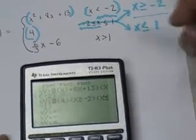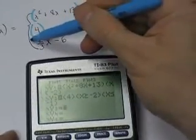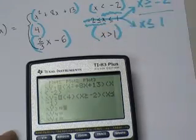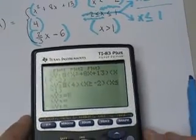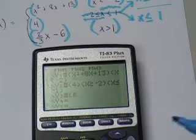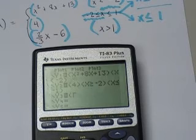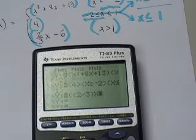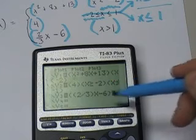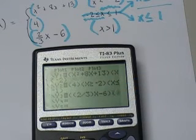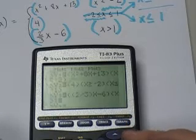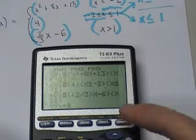And then our third equation. Put that in parentheses, put that in parentheses, and it will graph. So open parentheses, and I'm going to open a second parentheses to type the fraction 2/3x - 6. Then open parentheses, x is greater than 1. Graph.